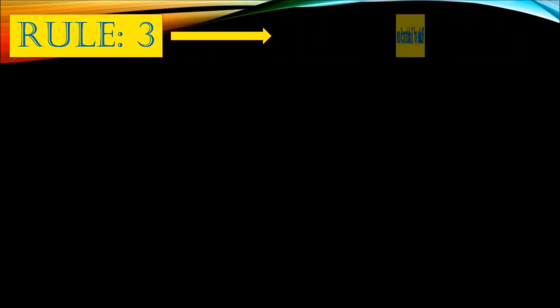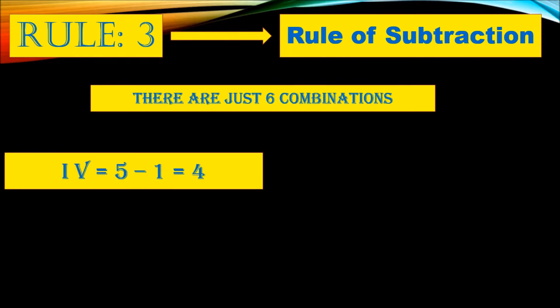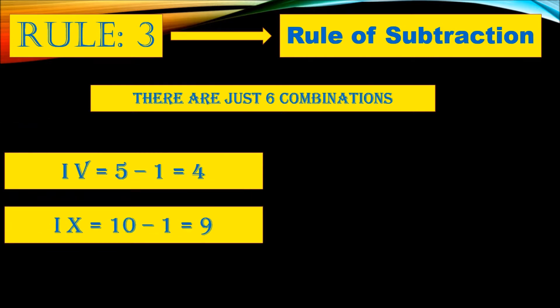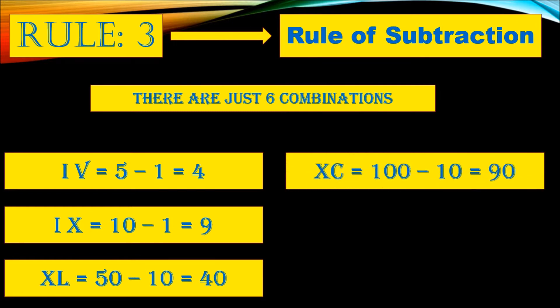Let's see them. IV, that is five minus one equals four. IX, that is ten minus one equals nine. XL, that is fifty minus ten equals forty.